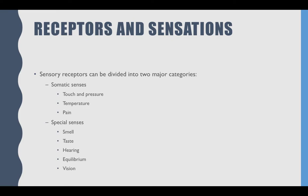Here are the two main divisions of your senses. Somatic senses include touch and pressure, temperature, and pain. Special senses are more developed and have organs to help gather information from the outside world — those include smell, taste, hearing, equilibrium, and vision. Today we're going to talk about your somatic senses and then smell and taste of the special senses, saving the others for later.